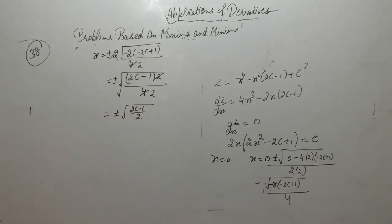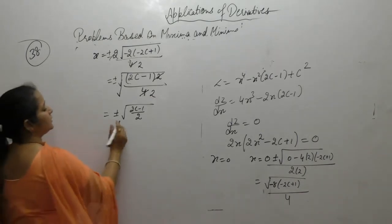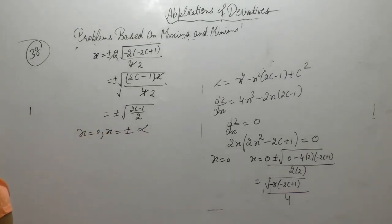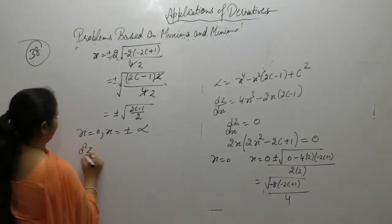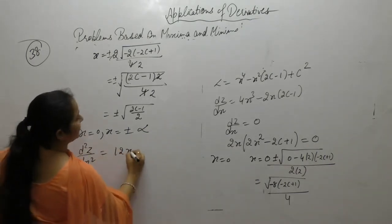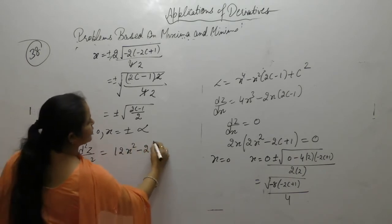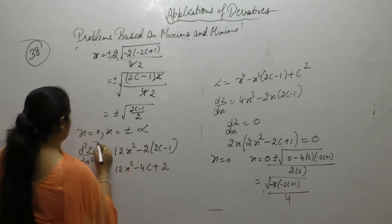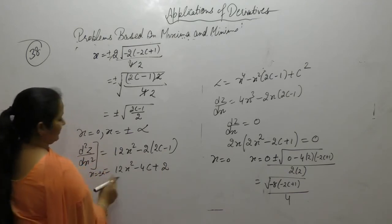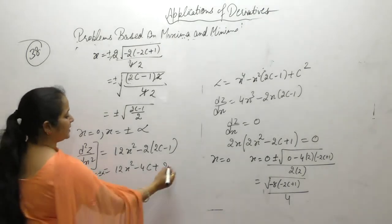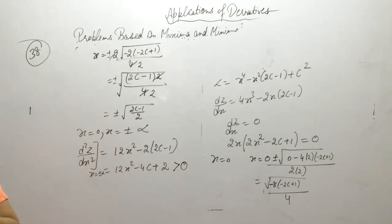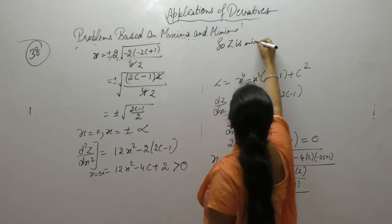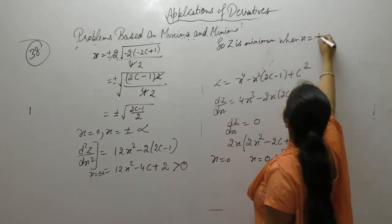Let this value be alpha, so alpha equals sqrt(2c minus 1) / 2. We have x equals 0 and x equals plus minus alpha. Now find the second derivative: 4 into 3 gives 12x squared. Derivative of x is 1. When x equals plus minus alpha, x squared is always positive, so the second derivative is greater than zero.